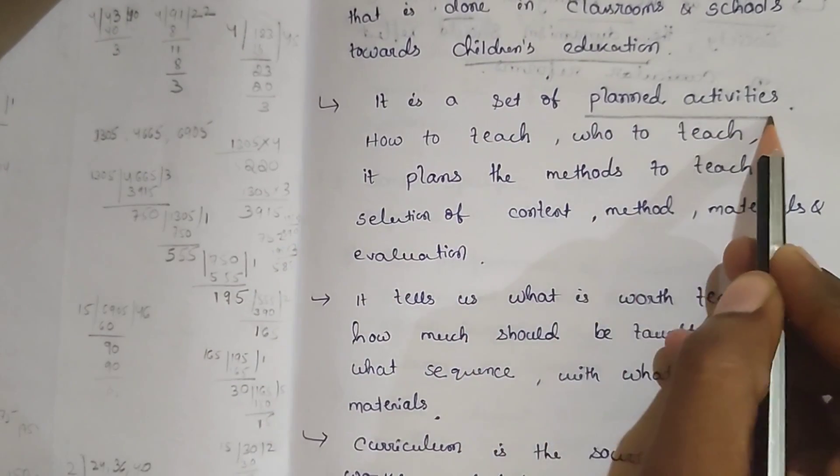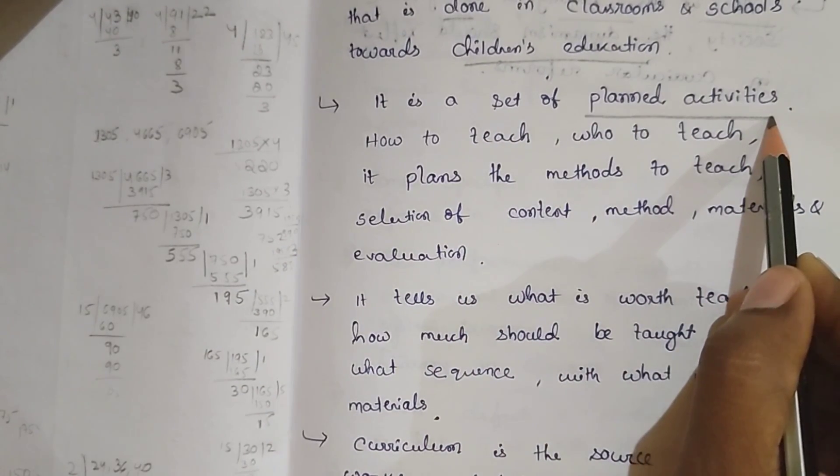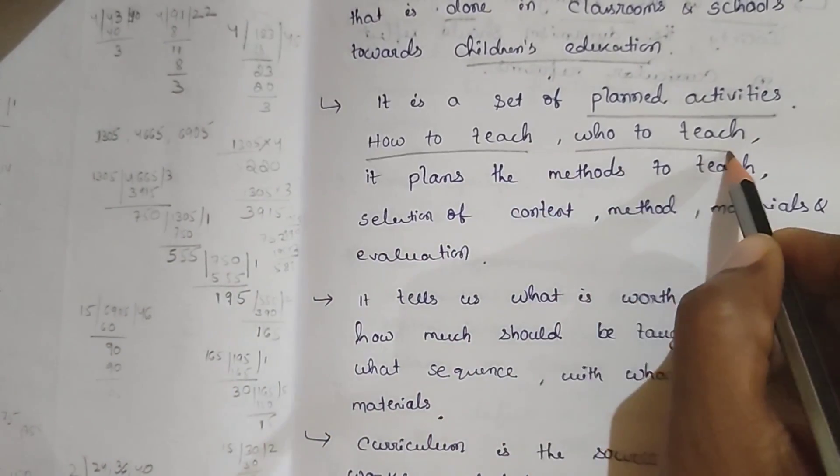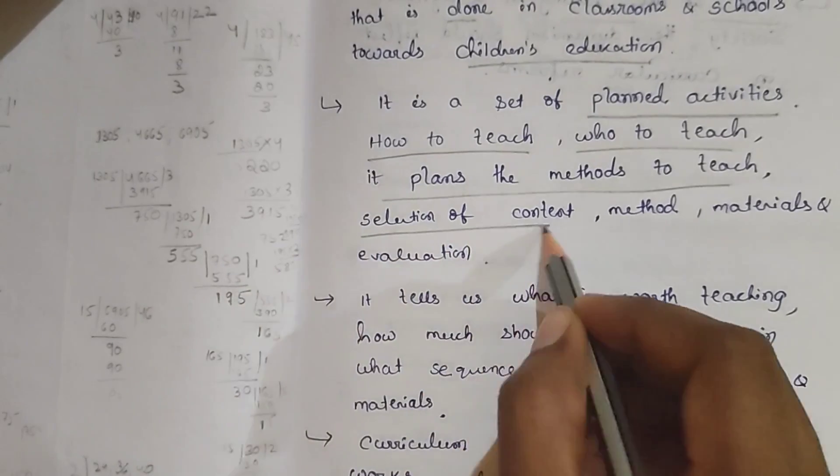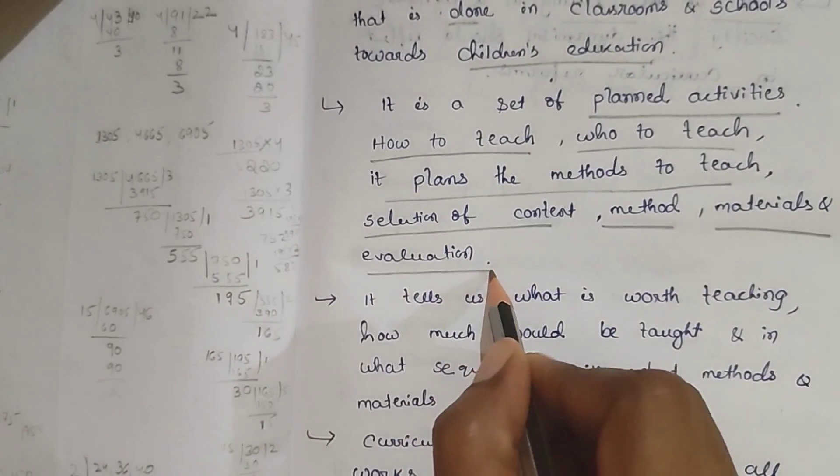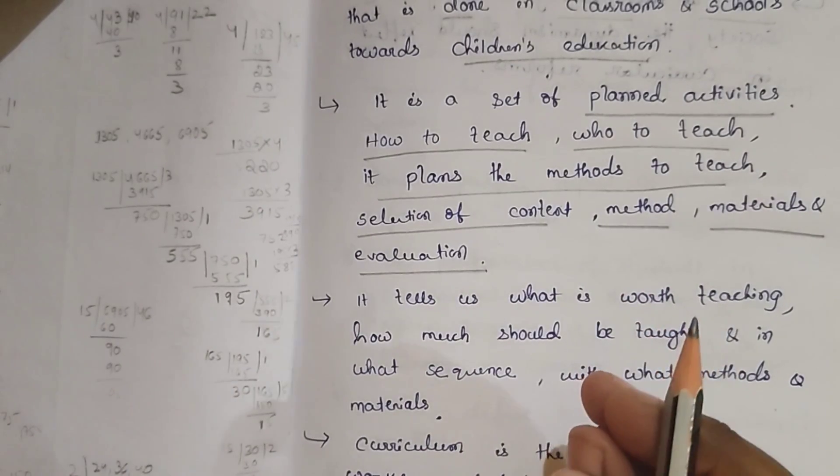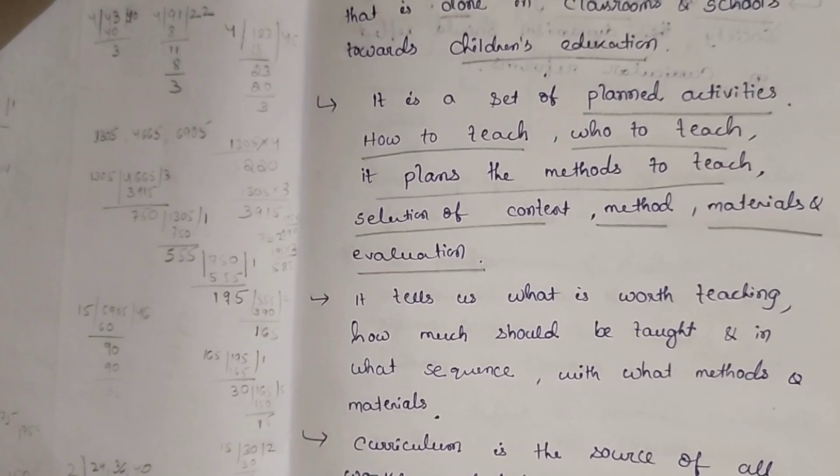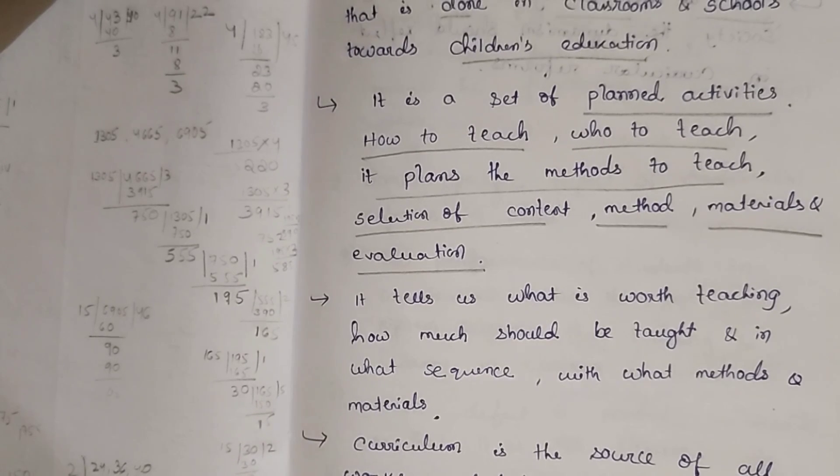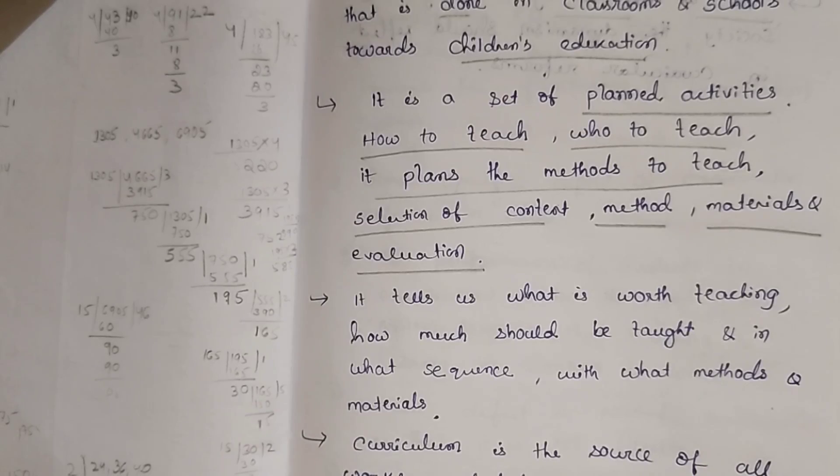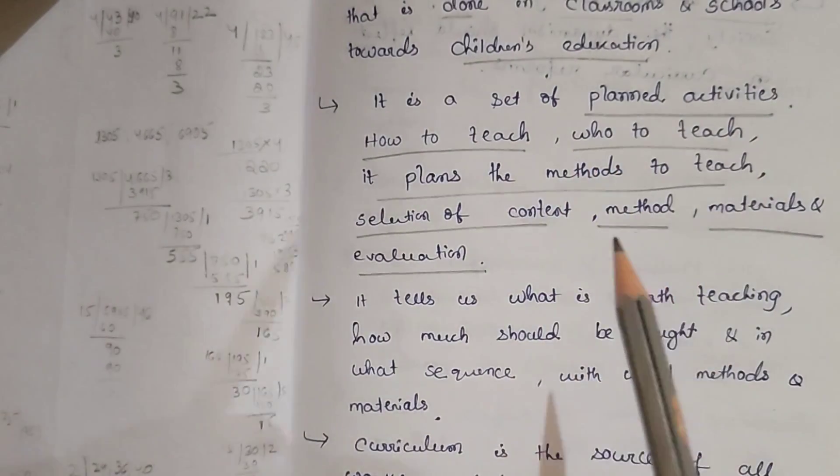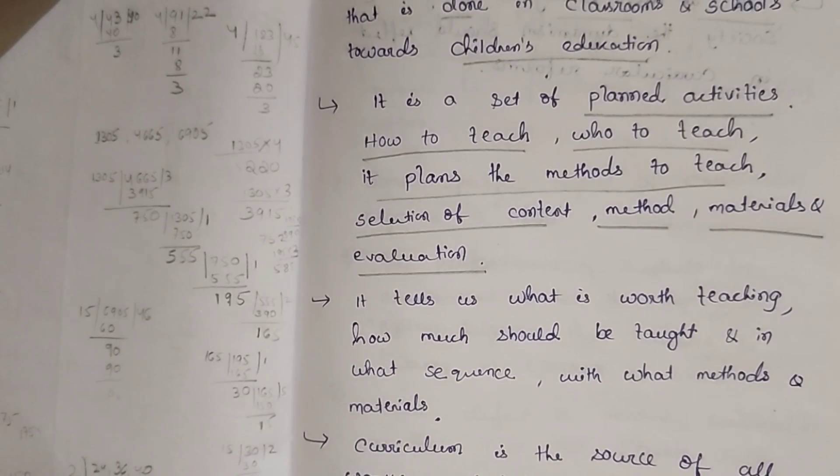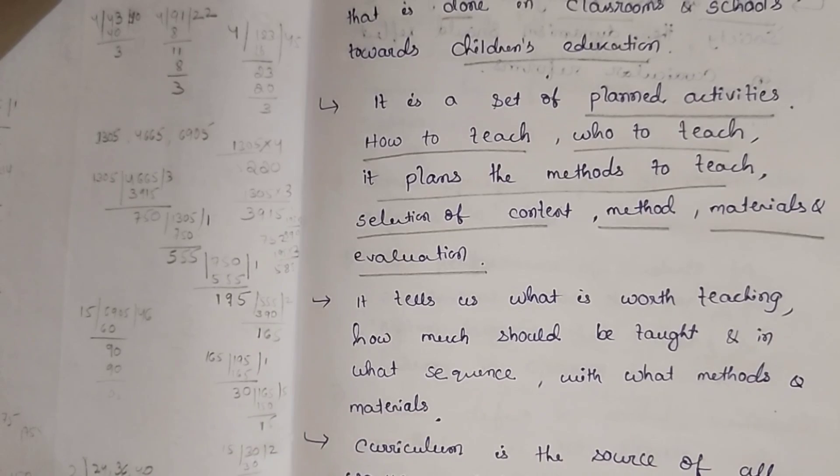It is a set of planned activities. Curriculum is a planned activity - how to teach, who to teach. It plans the methods to teach, selection of content, method, material, and evaluation. A teacher entering the class has to plan what topic to teach, how to teach it, what method to use, what material to use. This is a planned activity - how to teach, who to teach, what methods to use, selection of the content, material, and evaluation.